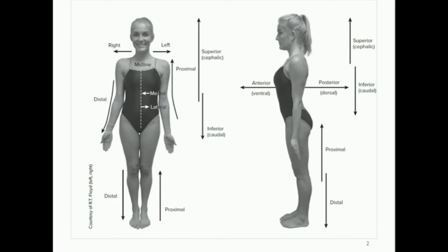When talking about positions on a limb, we typically use proximal or distal, not superior or inferior. In anatomical position, the hand would be inferior, but if she lifts her arm up, the hand becomes superior to the elbow. So depending on position, superior and inferior can change. For limbs, we use distal and proximal because the ankle is always distal to the knee, and the knee is always proximal to the ankle, regardless of position.